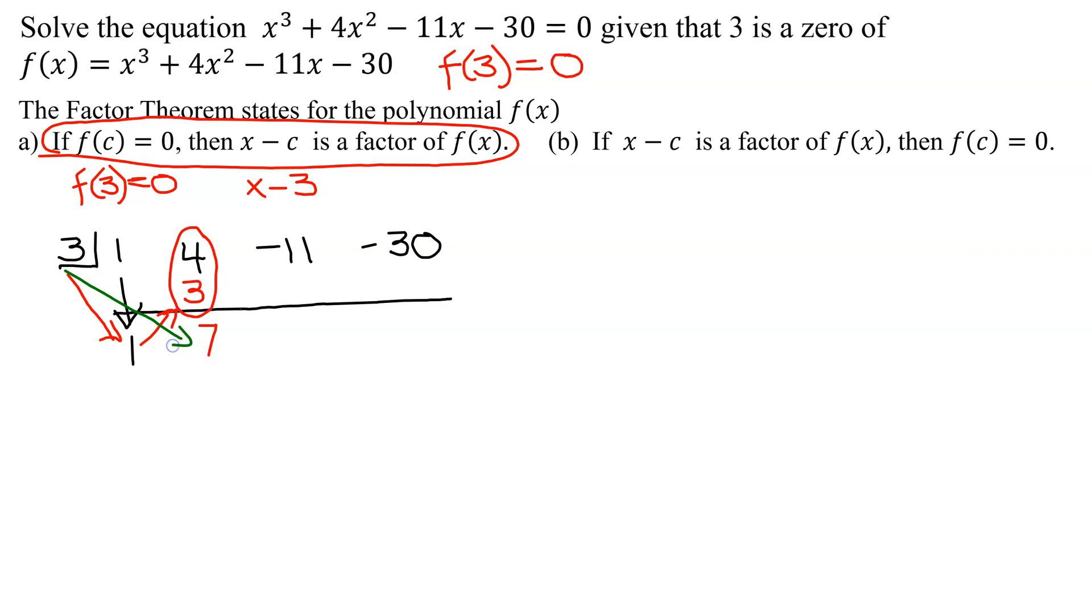Now repeat the process. 3 times 7 is 21. Write the answer up here. Add the numbers. -11 and 21 is positive 10.